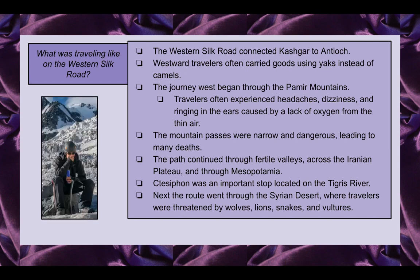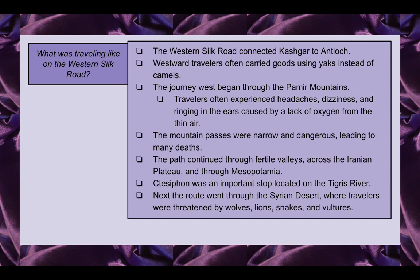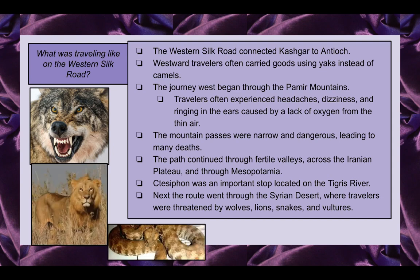Altitude sickness could be pretty severe — there are YouTube videos of people attempting hikes in Nepal or other high mountains who couldn't continue because they got sick. The mountain passes were narrow and dangerous, leading to many deaths. The path continued through the Fertile Valleys, across the Iranian Plateau, and through Mesopotamia. Ctesiphon was an important stop located on the Tigris River. Finally, the route went through the Syrian Desert, where travelers were threatened by wolves, lions, snakes, and vultures.